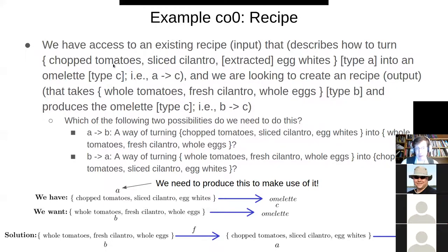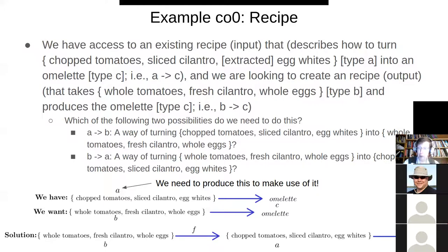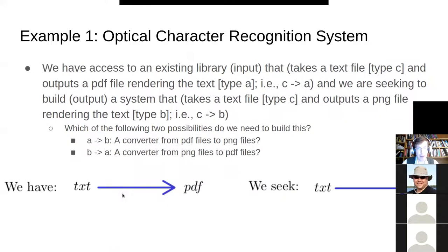If you think about this recipe as getting from starting point to a whole omelette, when we add on at the end we just need covariance — we had the omelette in hand. When we add on at the beginning, we need contravariance — we need to produce that starting condition. The starting point is upstream; the omelette is the end point. Adding at the end is covariant, adding at the beginning requires contravariance because we need to get to that starting point.